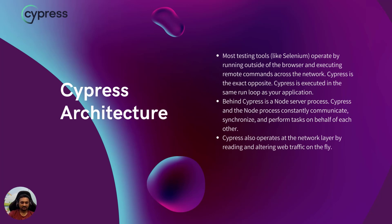For example, if your application is returning a 200 status code but you want to mock it as a 500, that can be done because Cypress operates at the network layer. That 500 status code can be passed to your application so you can check how it behaves upon receiving it. Those are some of the cool architectural features of Cypress. That's it for this video — thanks for watching.